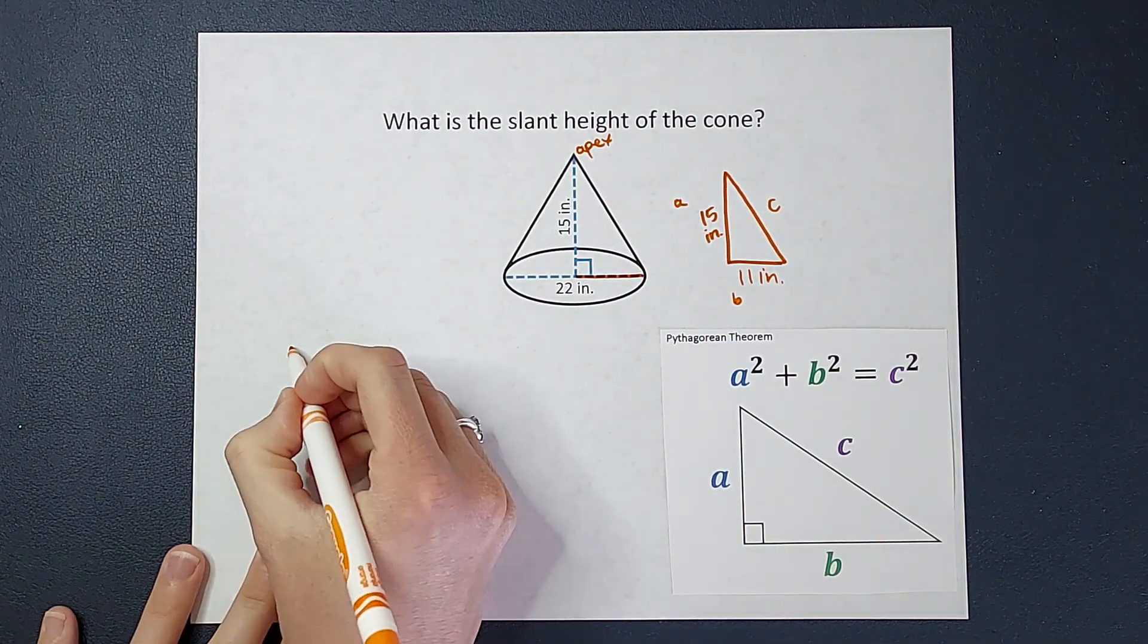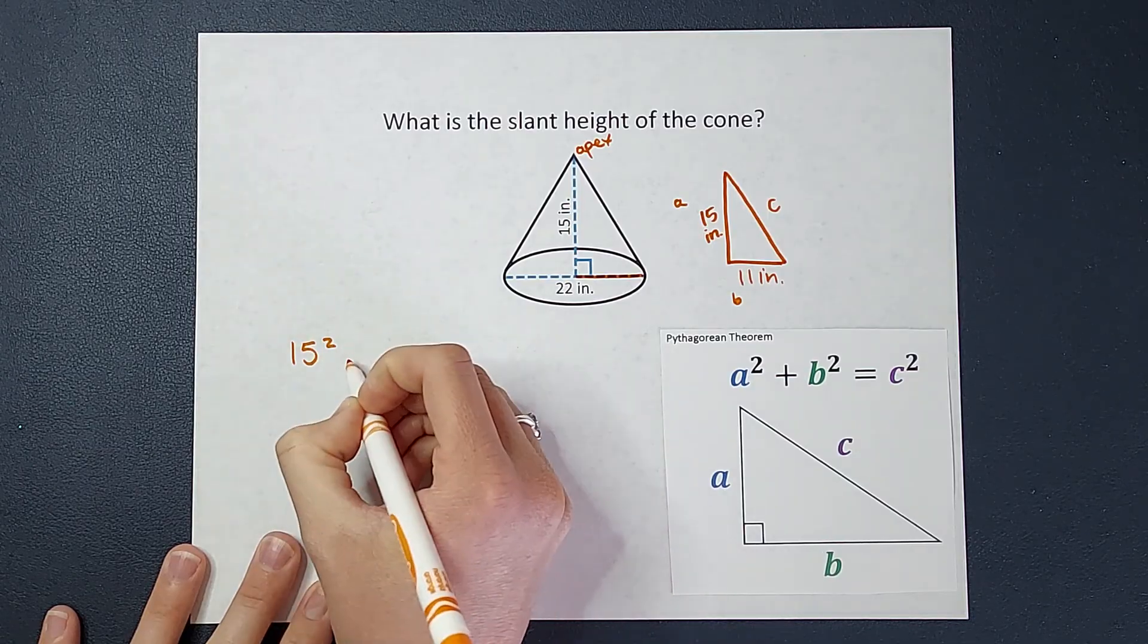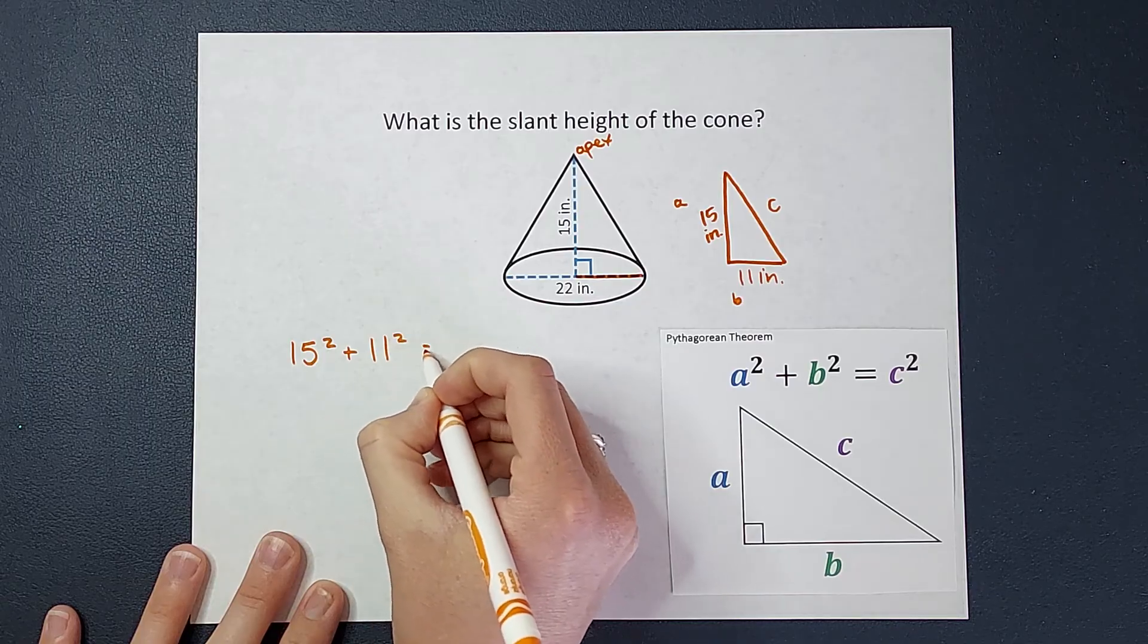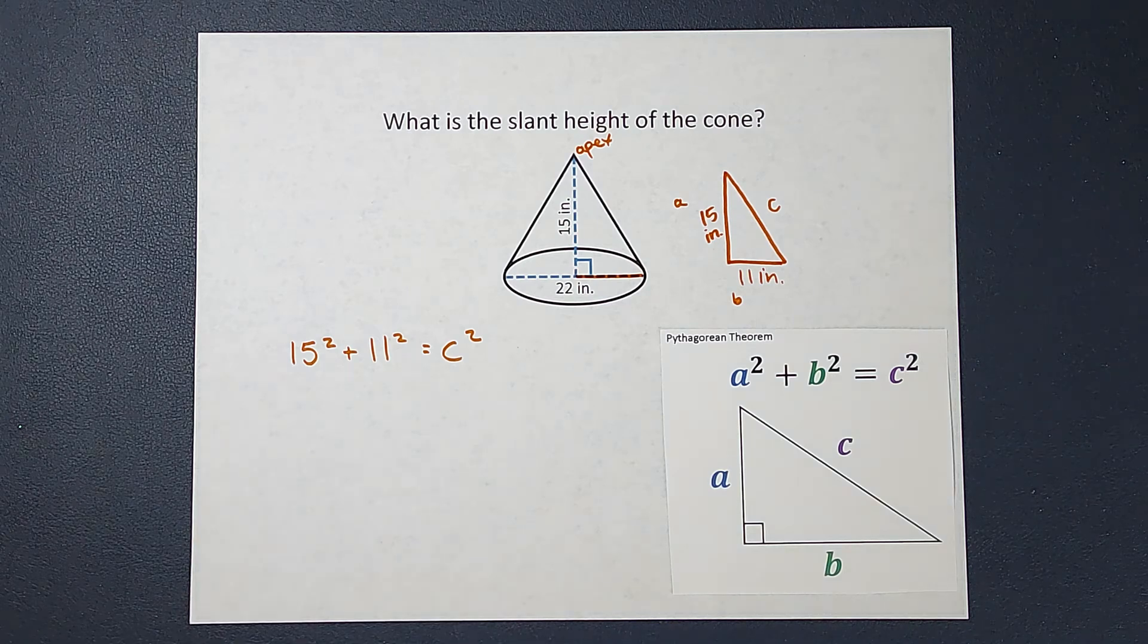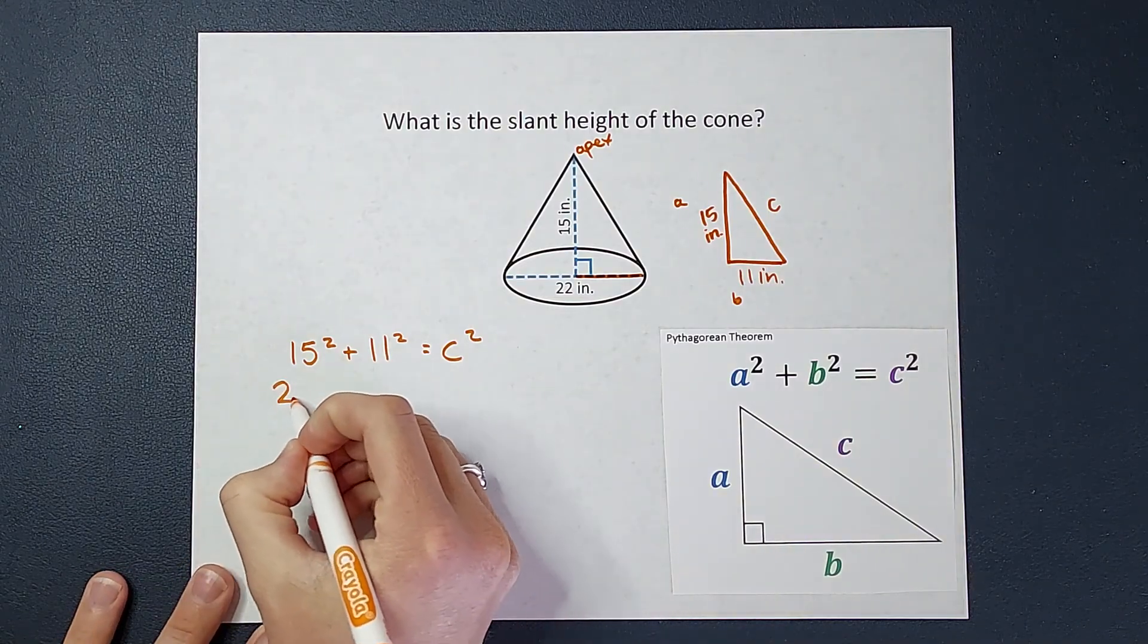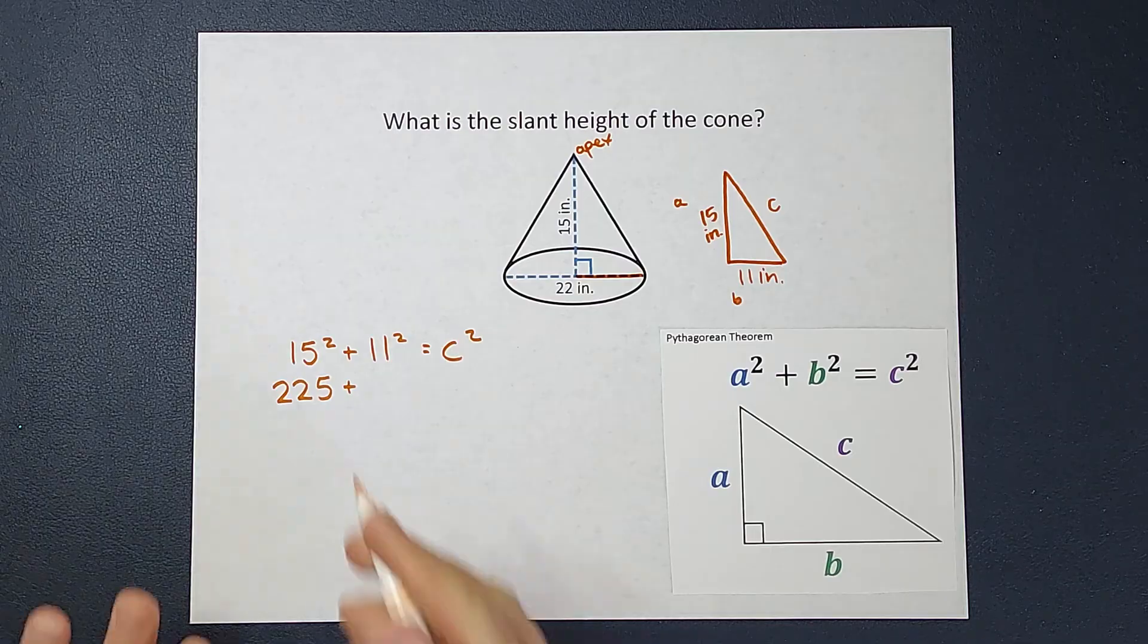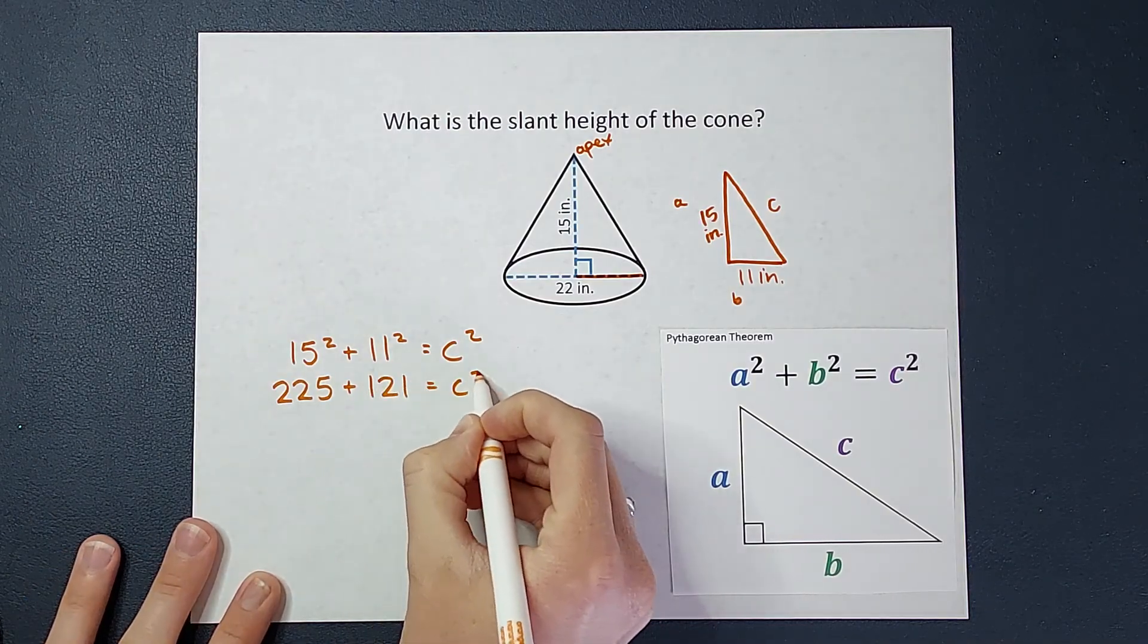So let's go ahead and plug that in. We're going to have a squared, which is going to be 15 squared, plus b squared, 11 squared, equals c squared. That's what I don't know, my slant height. When I go ahead and multiply this out, 15 squared, that's 15 times 15, which gives me 225, plus 11 squared is 121, and we're still equal to c squared.